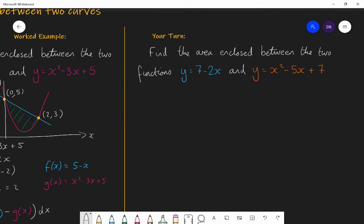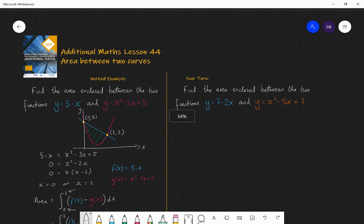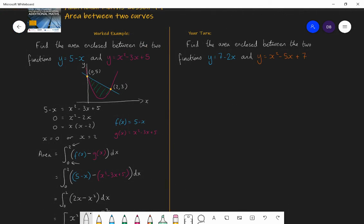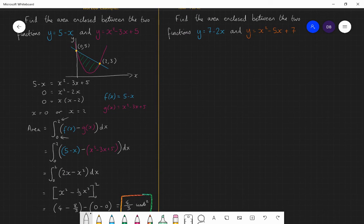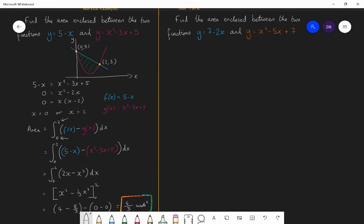So what I want you to do is find the area enclosed between the two functions y equals 7 minus 2x and the function y equals x squared minus 5x plus 7. So pause at this point. Use the workings out that I did for the previous question to help you. And have a go.